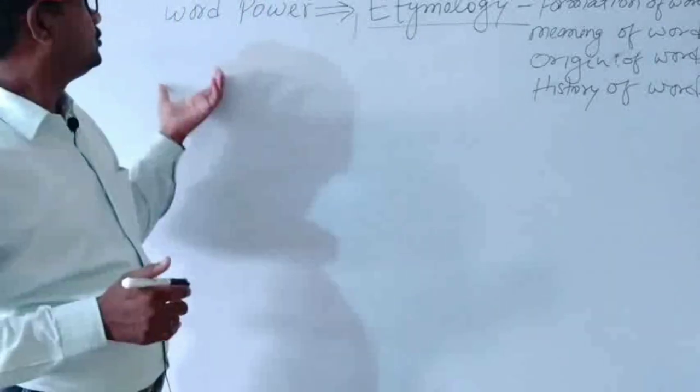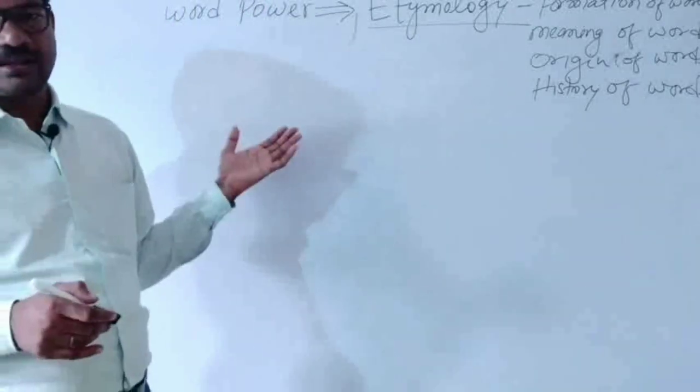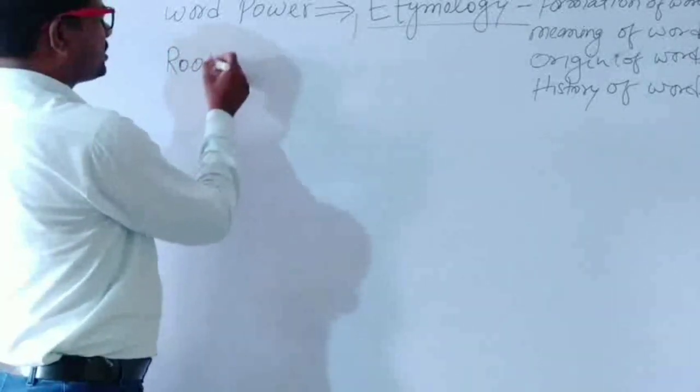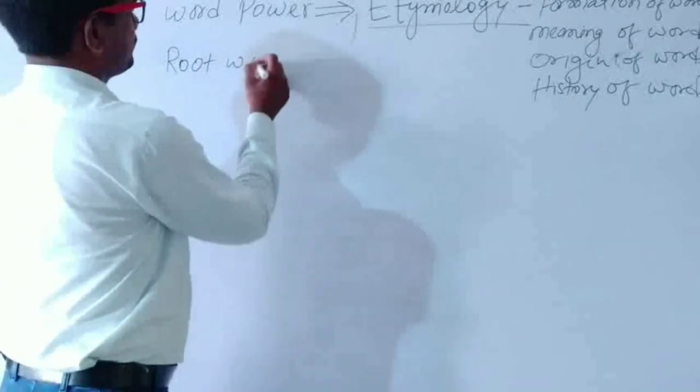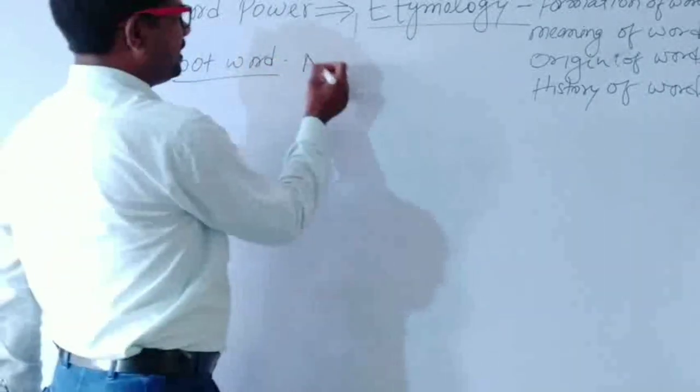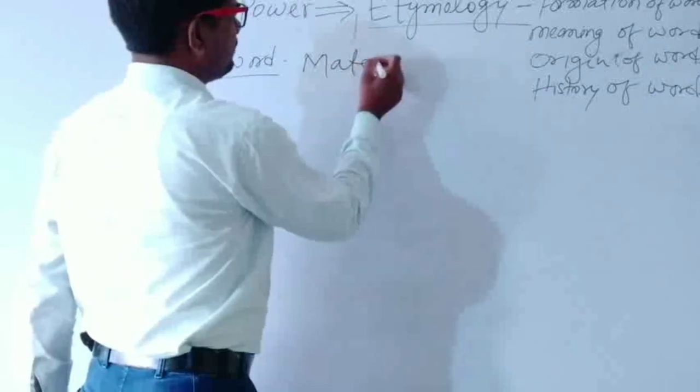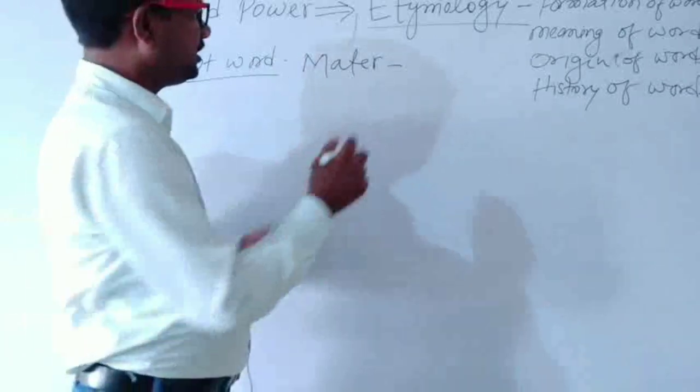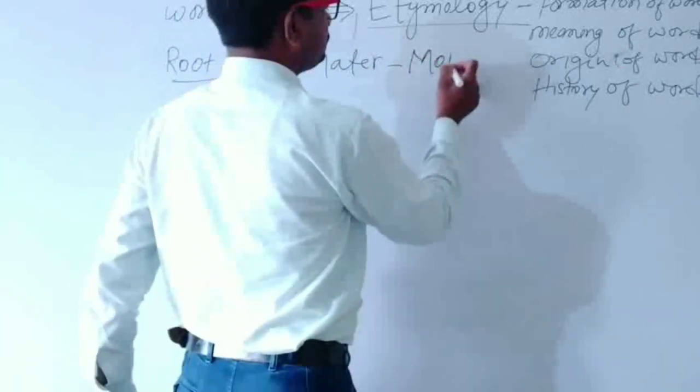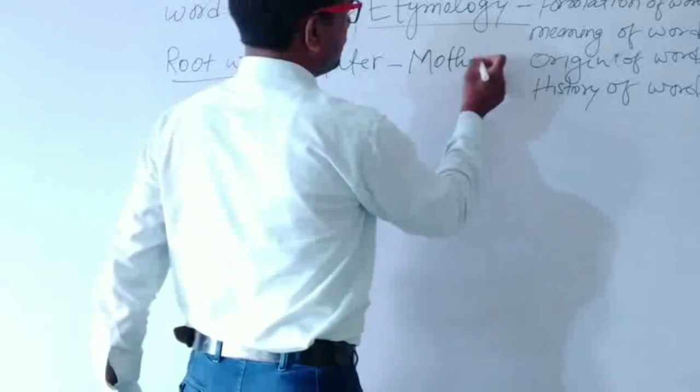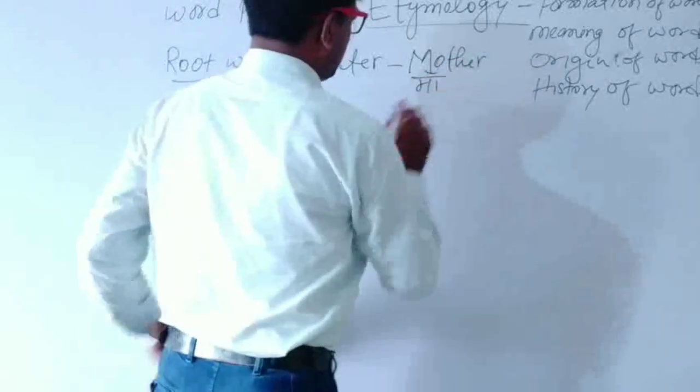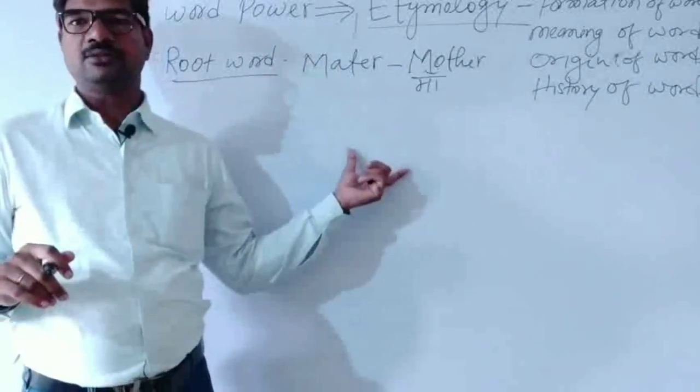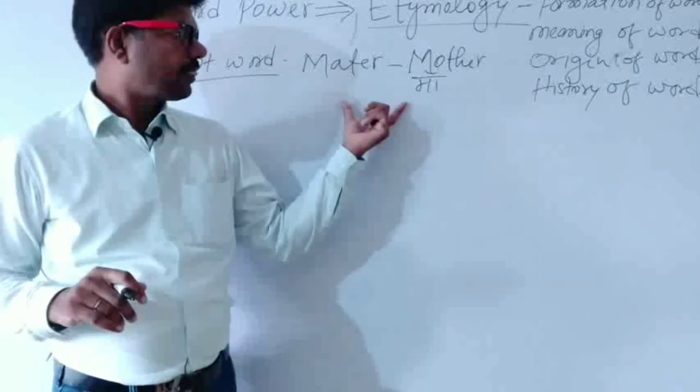So let's see what the etymology word is and how we know. Here is a root word. Root means mole, root word means meter. Meter in Latin language means mom, mother. There are some words where meter means mother.